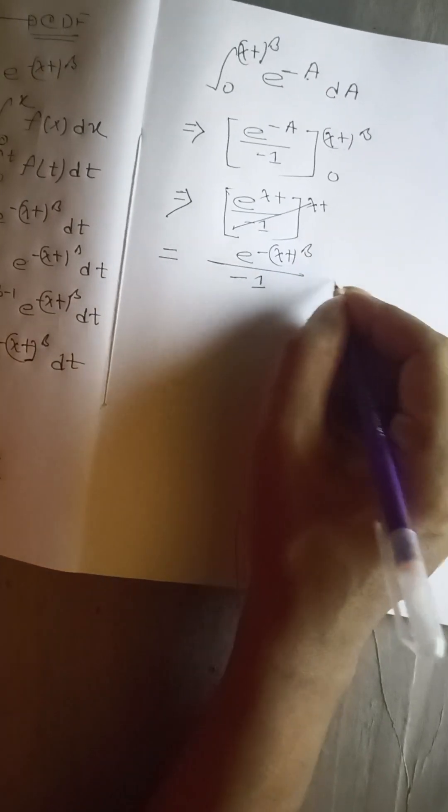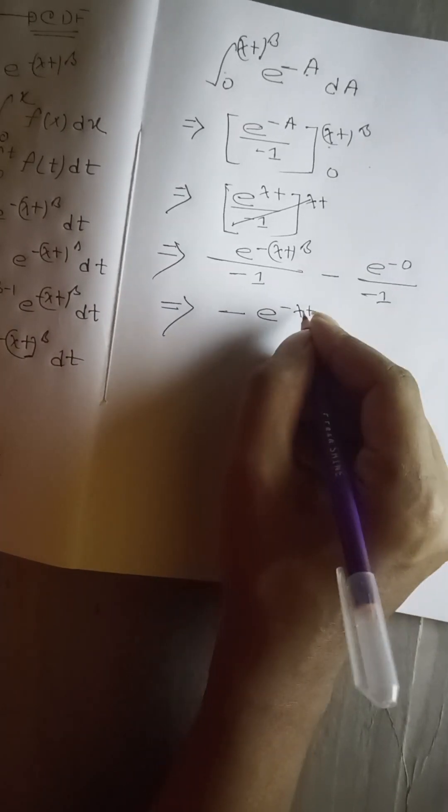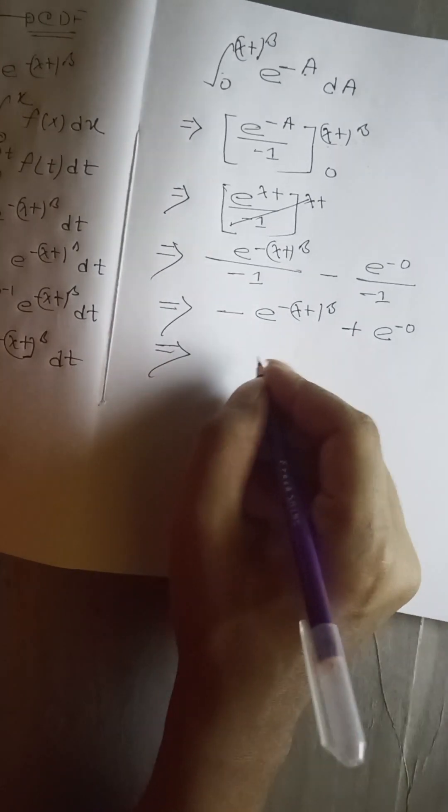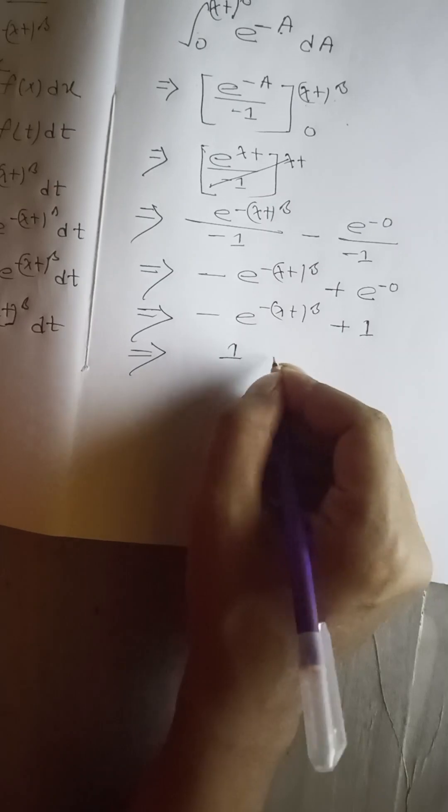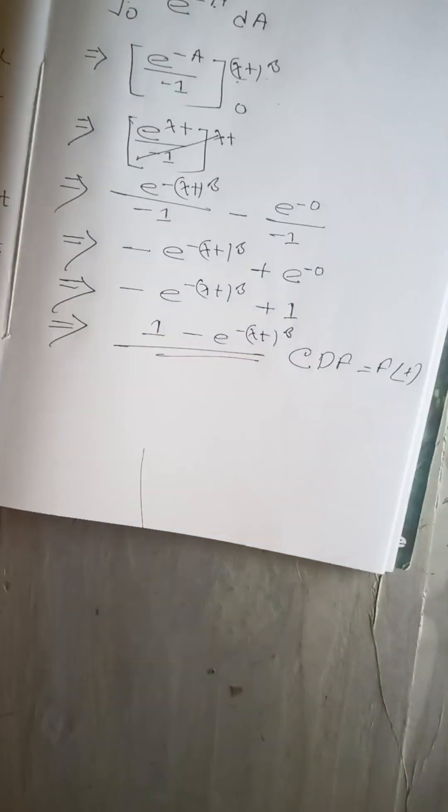Integrating e^(-a) da gives e^(-a)/(−1). Replacing back a = (λt)^β and evaluating from 0 to (λt)^β, we get: −e^(-(λt)^β) − (−e^0), which gives −e^(-(λt)^β) + 1. So the CDF is F(t) = 1 − e^(-(λt)^β).